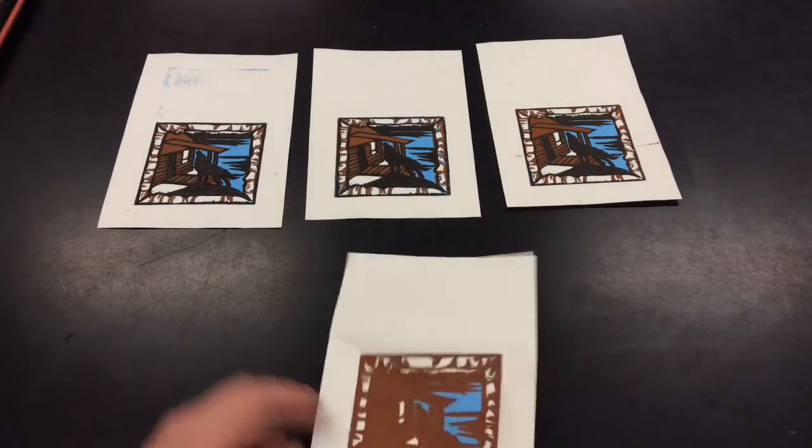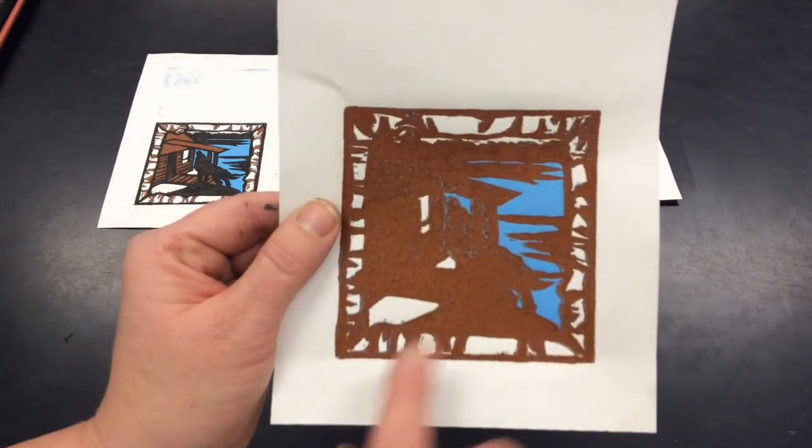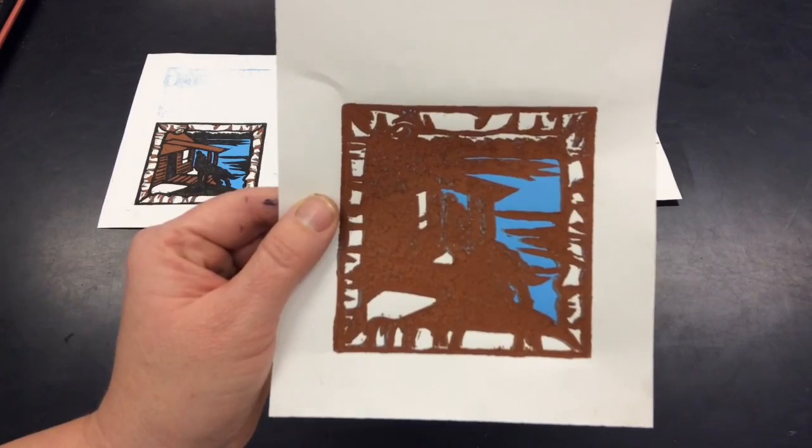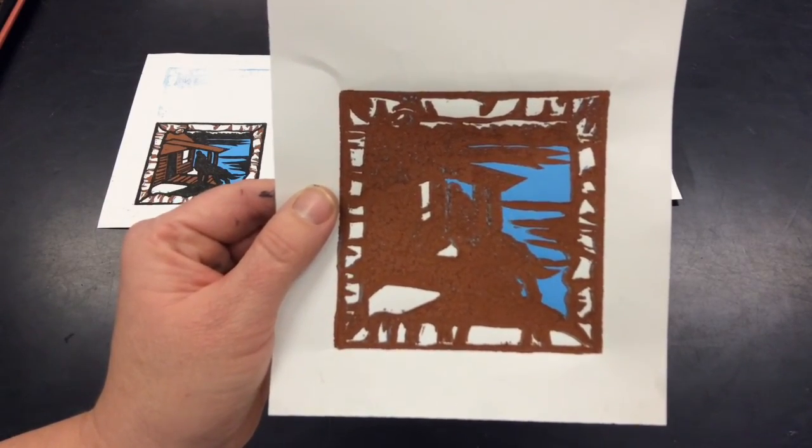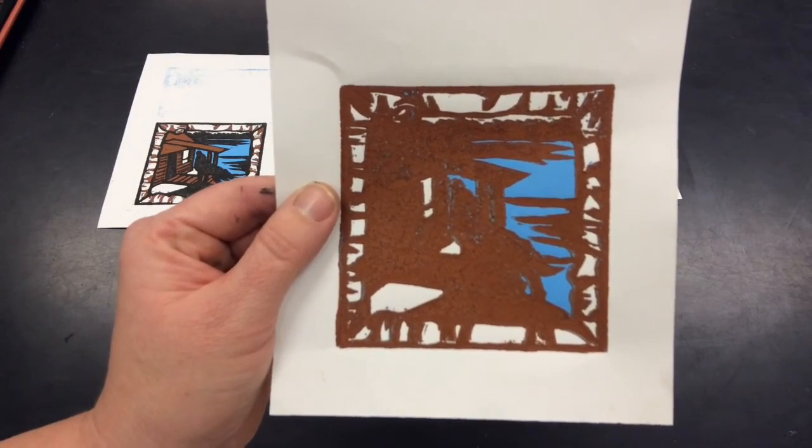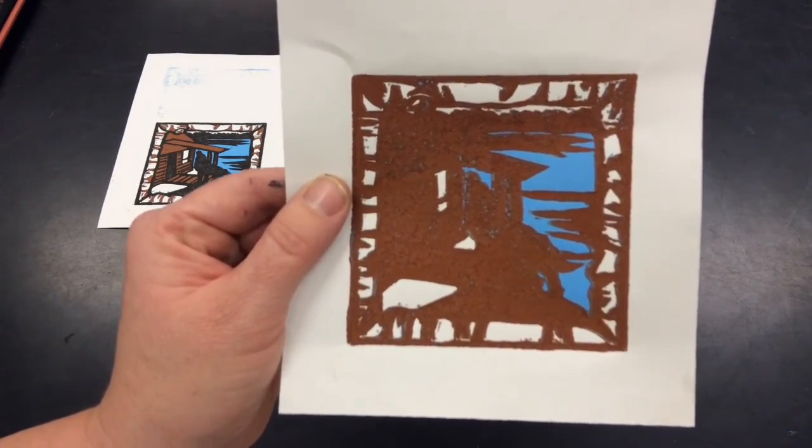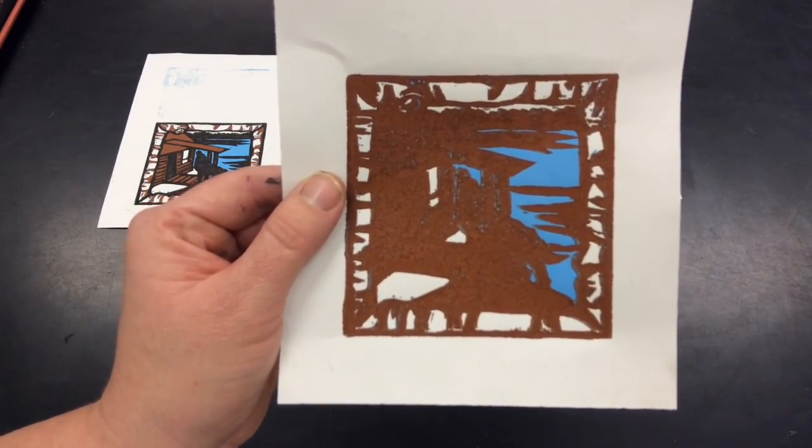Here if you look at this print you can see how there is a lot of detail that is missing between the blue and the brown and this generally happens because there is too much ink or the print moves slightly when you were rubbing it. So this one as well is not a very good quality print so I ended up not doing the black on it.